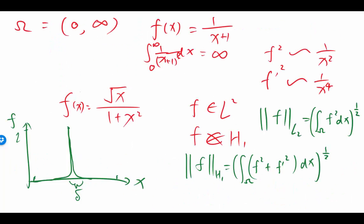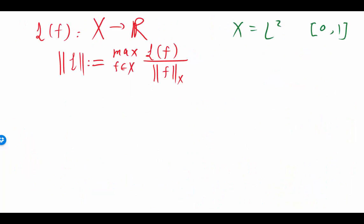For example, if X is L2 on domain [0,1], consider the linear functional that gives the value of the function at a particular point. You can choose functions that are narrower and narrower — the value of the functional stays equal to 1, so the numerator stays at 1, but the norm of the function becomes smaller and smaller as you make it sharper and sharper. So the value of a function at a particular point is an unbounded functional in L2 space.